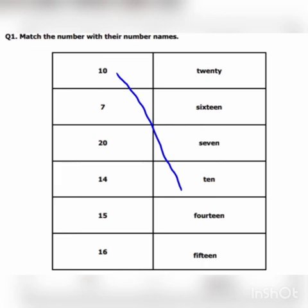The second number is seven. So we match seven with its number name. Seven is spelled S-E-V-E-N.